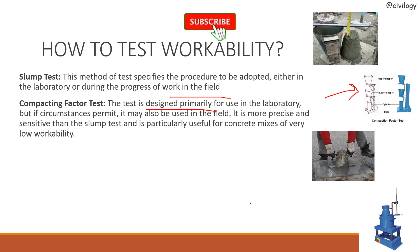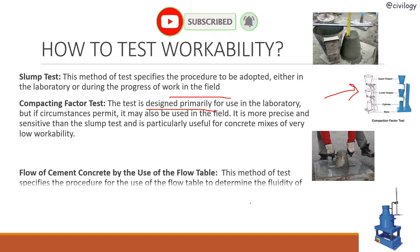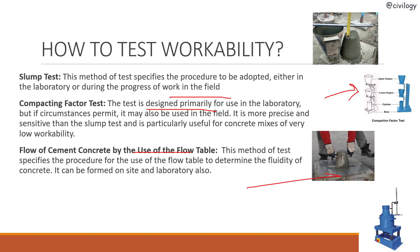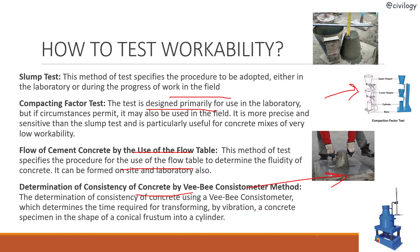The flow table test specifies the procedure for using a flow table to determine the fluidity of concrete, as shown in the picture. It can be performed on site or in the laboratory. The VB consistometer test determines the time required for transforming, by vibration, a concrete specimen in the shape of a conical frustum into a cylinder. These are the different tests that can be performed.